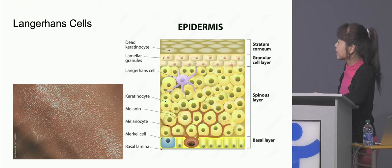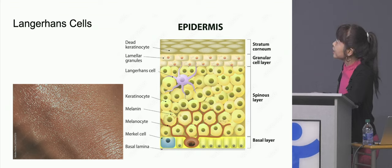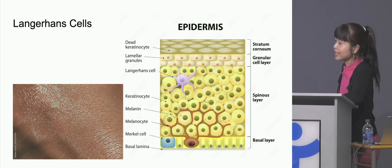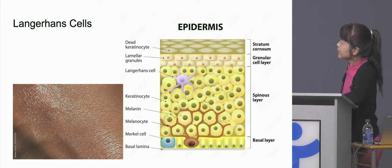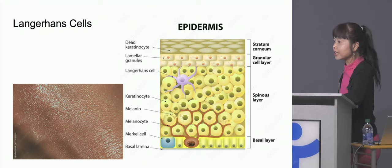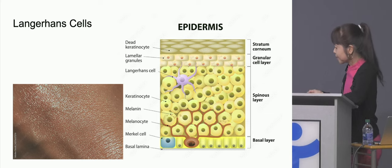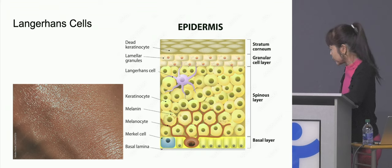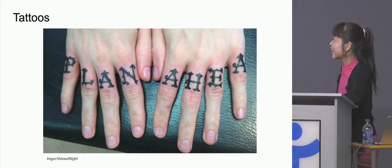These are Langerhans cells — the macrophages you would find in the skin. There's one hiding in there. The skin has a mucosal surface that is a barrier between the outside world and your inside — that's where you want your immune cells. These Langerhans cells are always sampling and checking out the environment outside, trying to detect if that skin surface has been broken and if we're under attack by any pathogens.